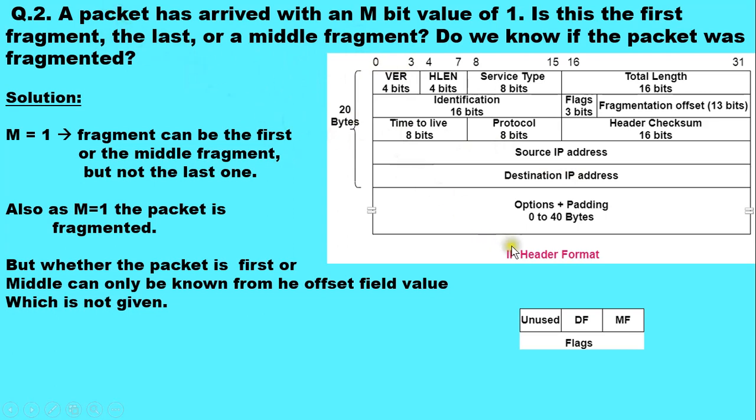To solve such numericals, you should have the understanding of the flags field in the IPv4 header format and the identification and fragment offset field. These three fields, identification, flags, and fragmentation offset, these three fields are used in case of fragmentation and reassembly.